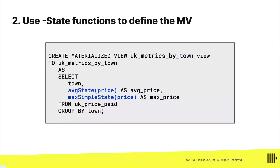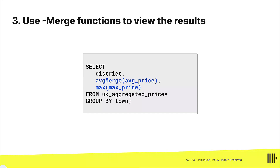In step two, when you define the materialized view, you can't just use avg or max — you have to use the State combinator. State works with any aggregate function; you simply append State. It's called an aggregate function combinator. For simpler functions like max, min, and sum, there's also a SimpleState combinator. In step three, to read those values back you must use the corresponding Merge function — unless you used SimpleAggregateFunction, in which case Merge is not required.